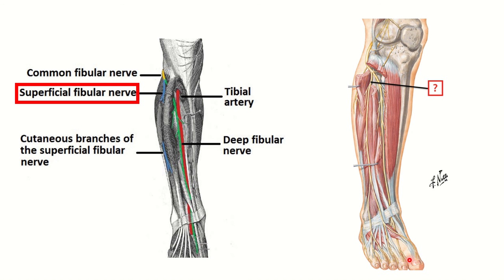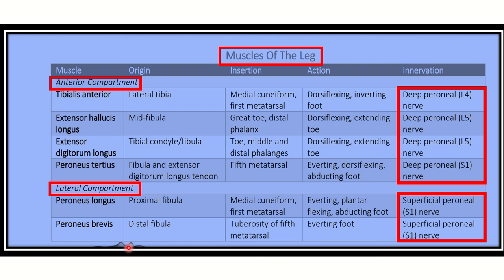Tibialis anterior is medial, extensor hallucis longus is just lateral to it — it inserts into the big toe. Then extensor digitorum longus covers the four digits, and peroneus tertius is also in this anterior compartment. All muscles of the anterior compartment are supplied by the deep peroneal nerve. So the anterior compartment is supplied by the deep peroneal nerve and the lateral compartment by the superficial peroneal nerve.